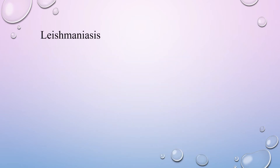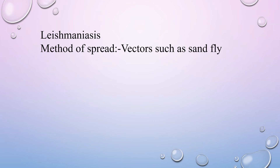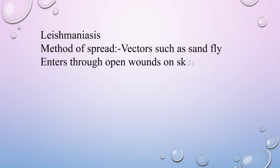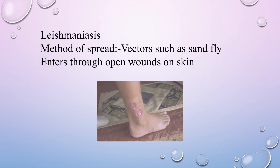The next protozoan disease is leishmaniasis. It spreads through vectors such as the sandfly and enters through open wounds on the skin. The symptoms include weight loss, weakness, bleeding on the wounds, and an enlarged liver.